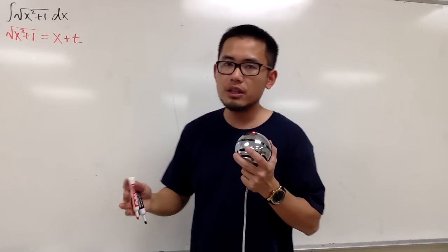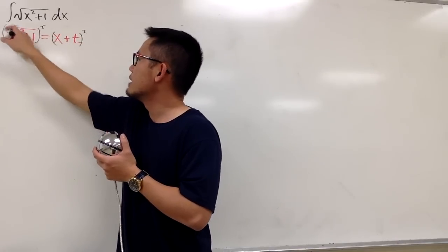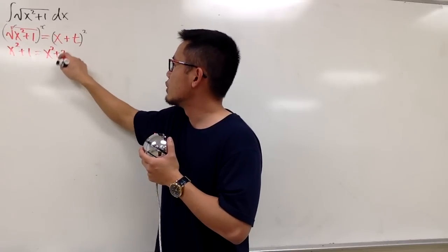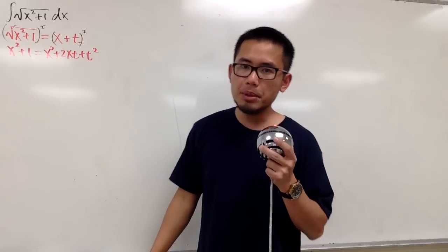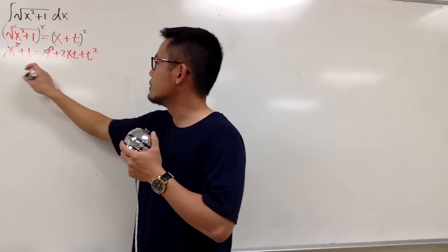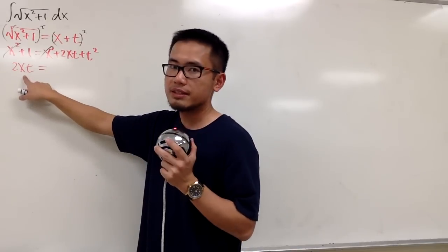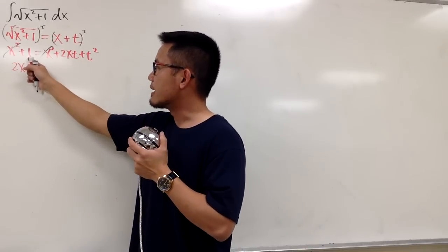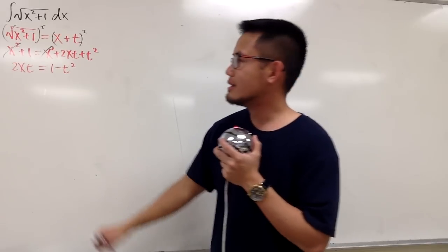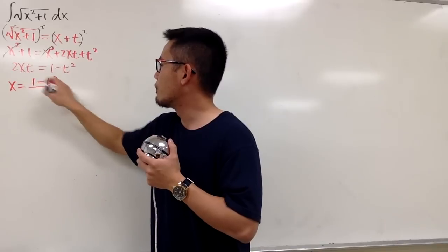To figure out dx, it may be better if we isolate x first. To do that, let's square both sides. The square root cancels, and we have x squared plus 1 equals x plus t squared, which expands to x squared plus 2xt plus t squared. The x squared terms cancel, giving us 2xt on the left. Moving t squared to the left-hand side, we have 1 minus t squared equals 2xt. Dividing both sides by 2t, we get x equals (1 minus t squared) over 2t.